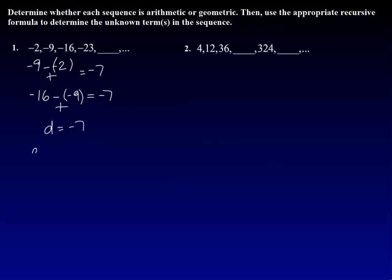So our recursive formula says a sub n equals a sub n minus 1 plus d, in this case negative 7. We are looking for the fifth term, so a sub 5, which means that we need a sub 4 plus negative 7.